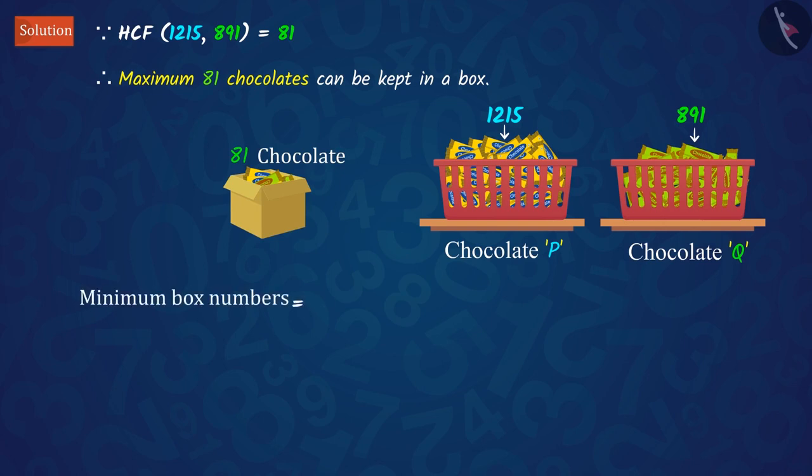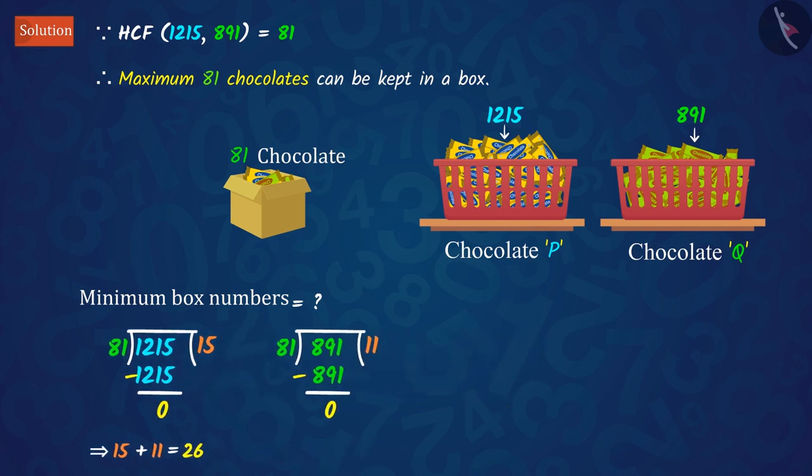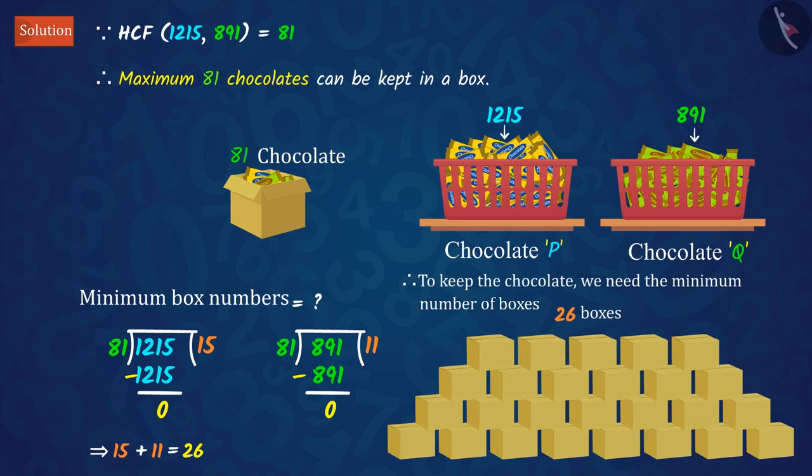Since we have to find the minimum number of boxes required, can you tell what we have to do in order to find this? Well done! If we divide the number of chocolates P and chocolate Q by 81, that is, the maximum number of chocolates that can be kept in a box, and add the quotients obtained, we get 26, which is the minimum number of boxes required. Hence, minimum 26 boxes are required to keep the chocolates.